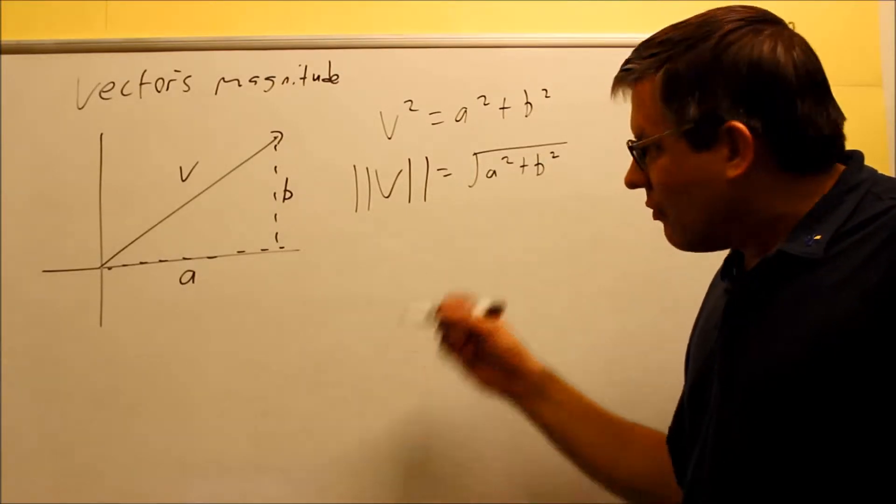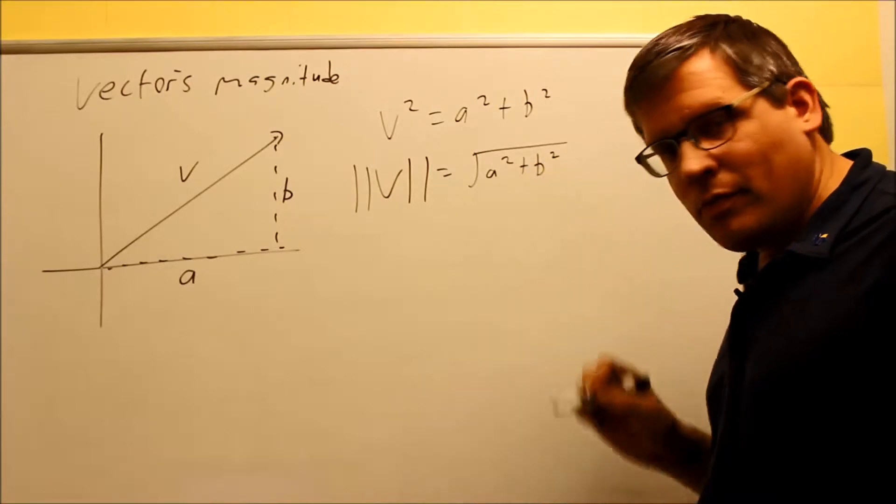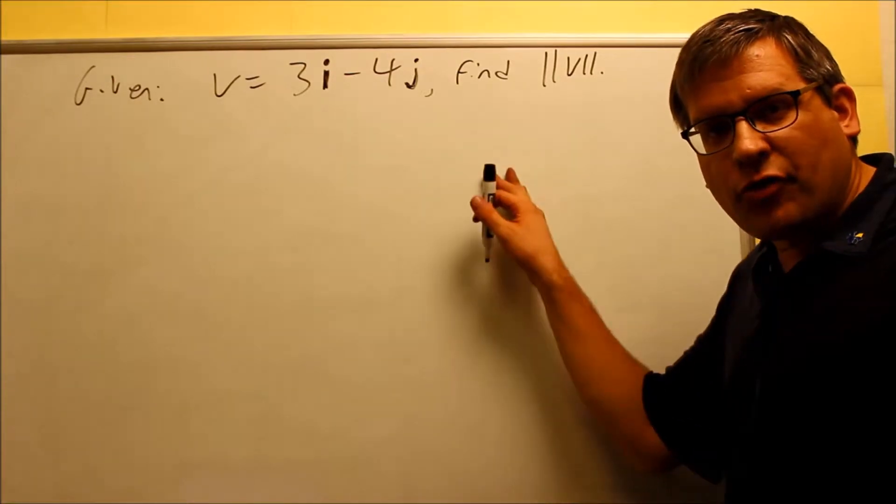So if they're asking you to find the magnitude of a certain vector, all you're going to do is put the two components in here, take the square root, and then that's going to be your answer. So now let's look at a couple examples. Here's our first example.